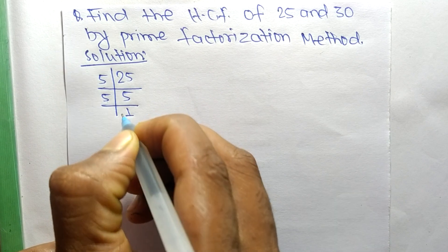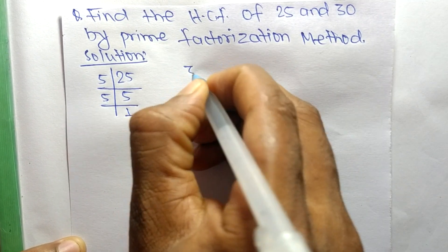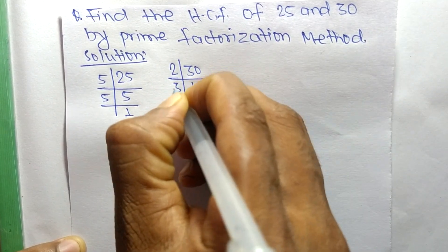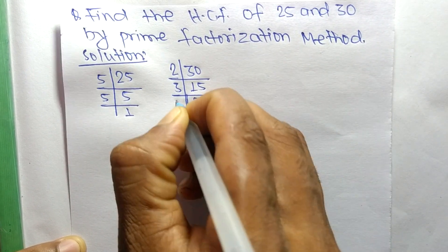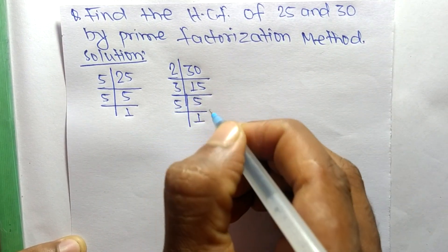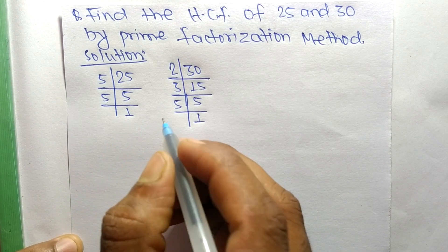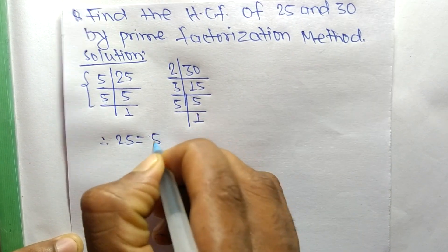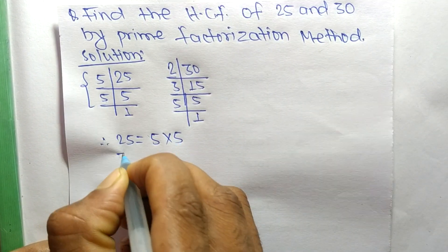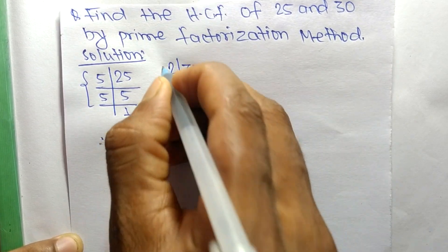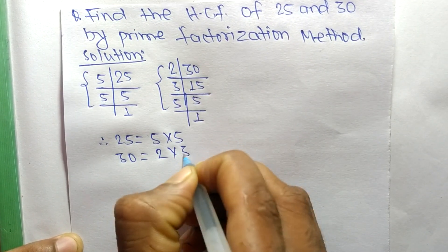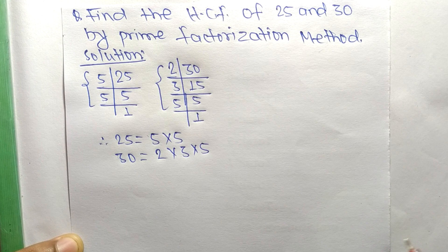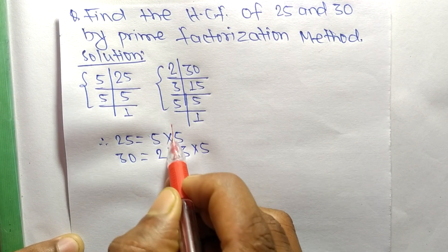The prime factors of 30 are 2 times 15, which equals 30; 3 times 5, which equals 15; and 5 times 1, which equals 5. So from these prime factors we can write: 25 is equal to 5 times 5, and 30 is equal to 2 times 3 times 5. Now we find out the common factors in the prime factors of 25 and 30.